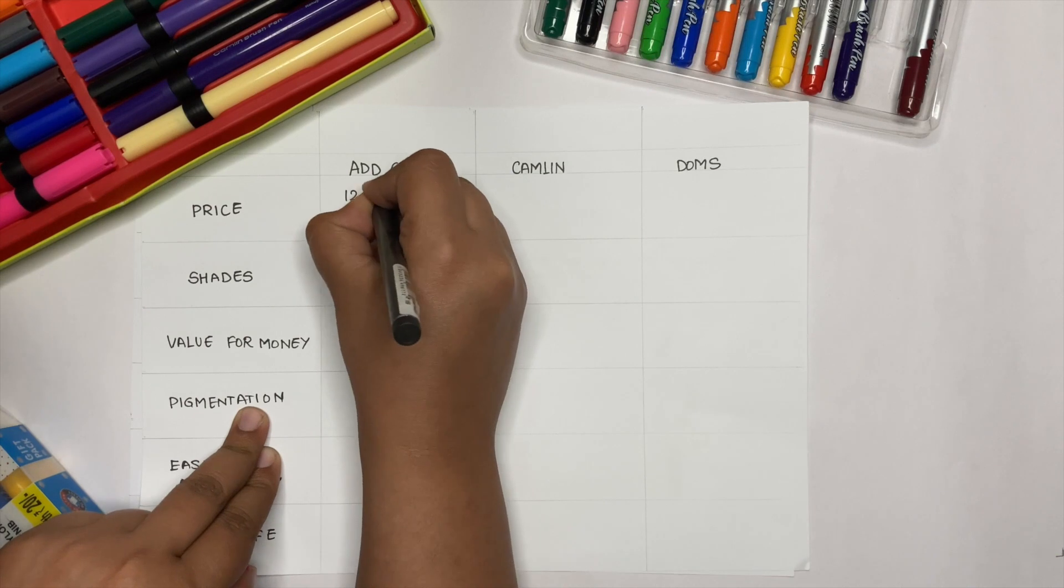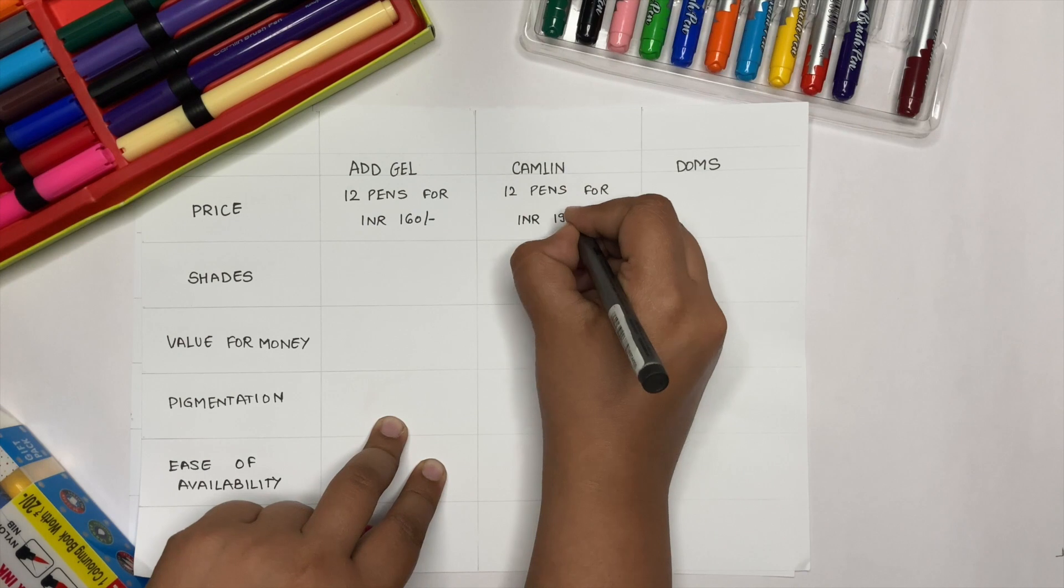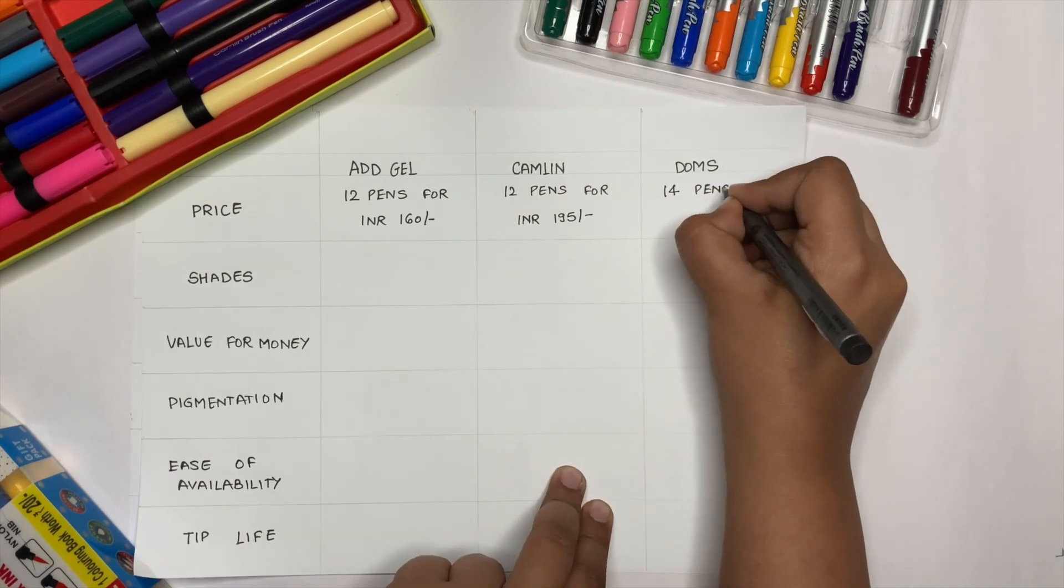You get 12 ADD Gel brush pens for INR 160, 12 Camlin brush pens for INR 195 and 14 DOMS brush pens for INR 200.